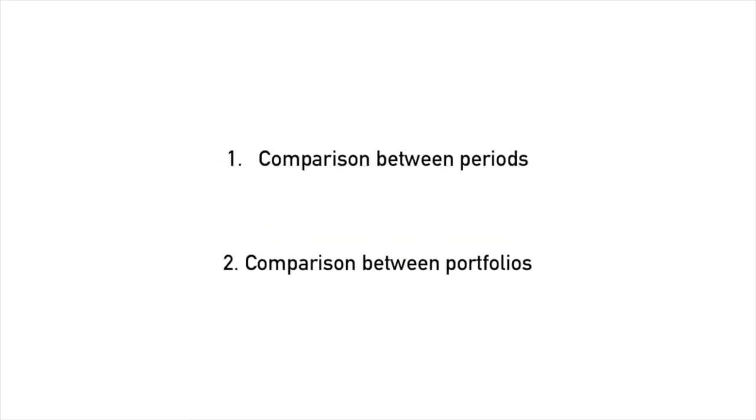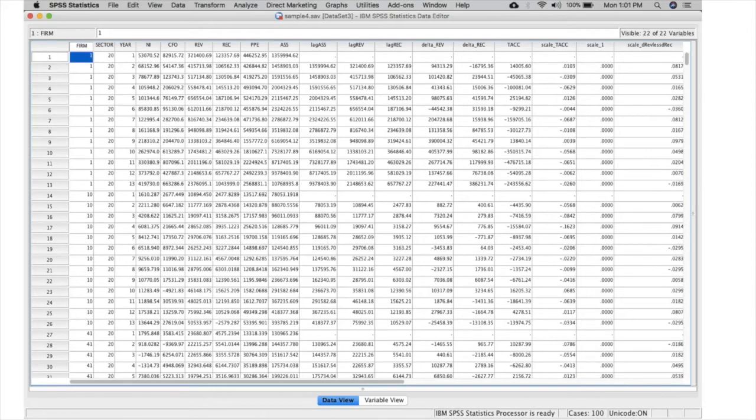Another way of using the output of the modified Jones model is to use it in predicting the level of earnings management of another year or period. We do this through what is typically called an event study.